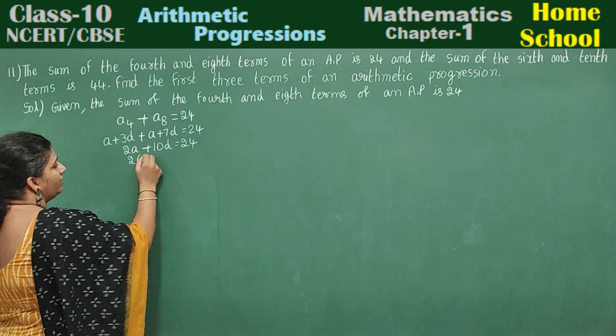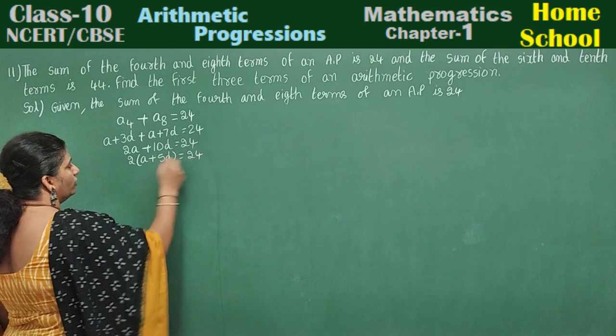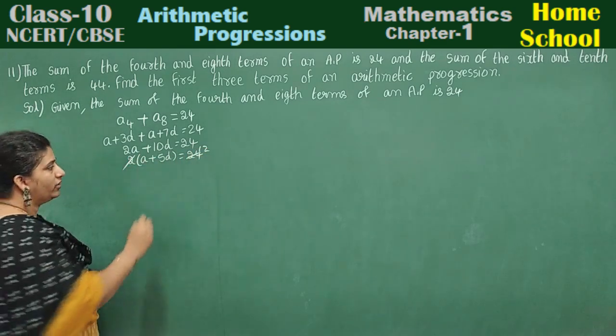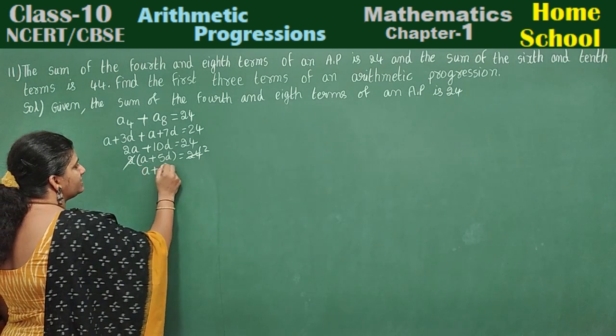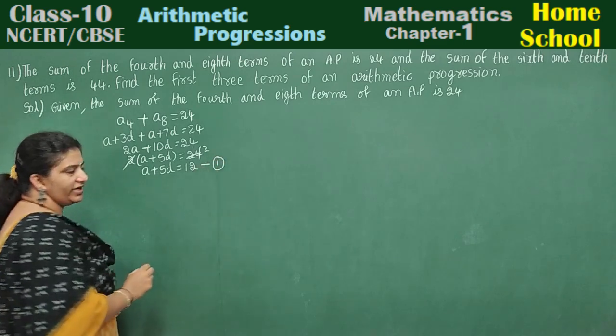Take out 2 common: A plus 5D equals 24. Divide by 2: A plus 5D equals 12. Mark it as the first equation.